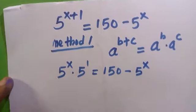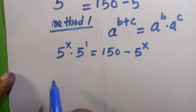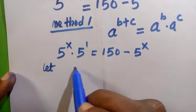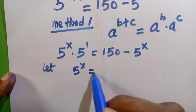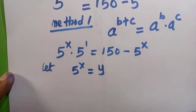So we have 5^x common to this. We are going to let 5^x equals y and we replace it in the last line.